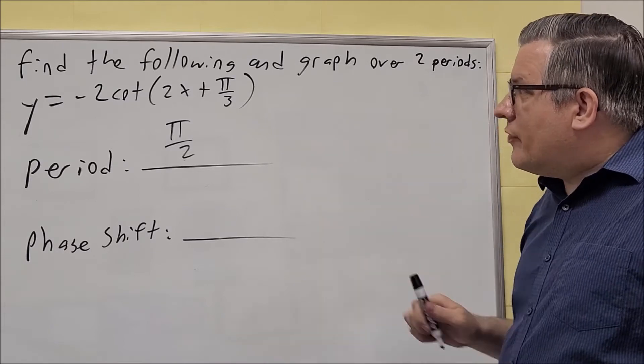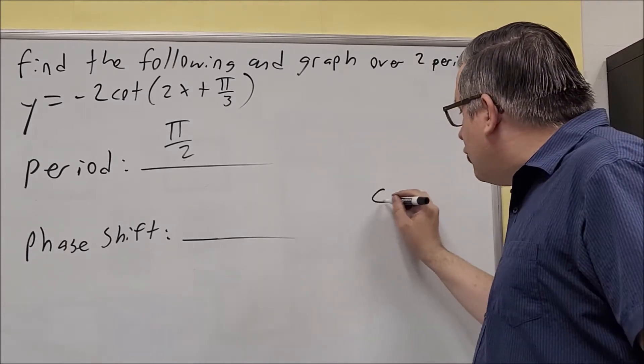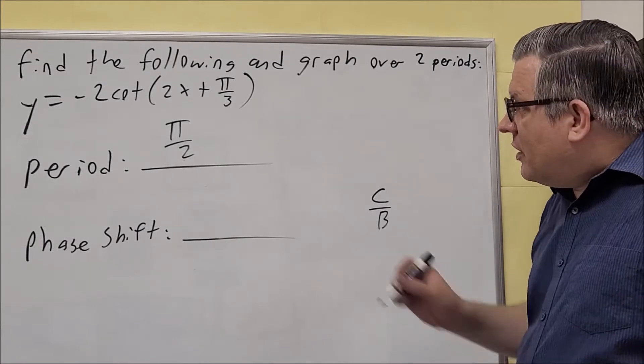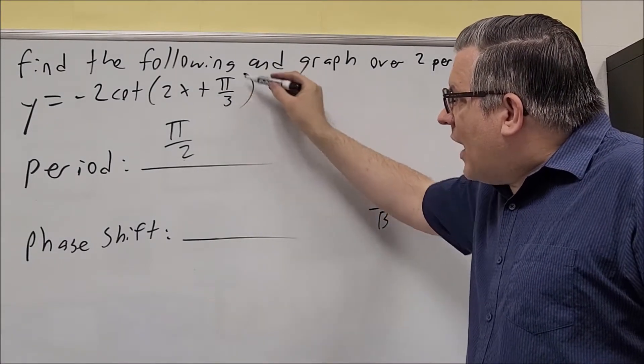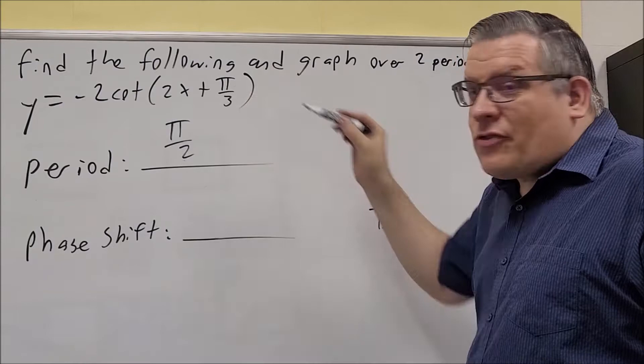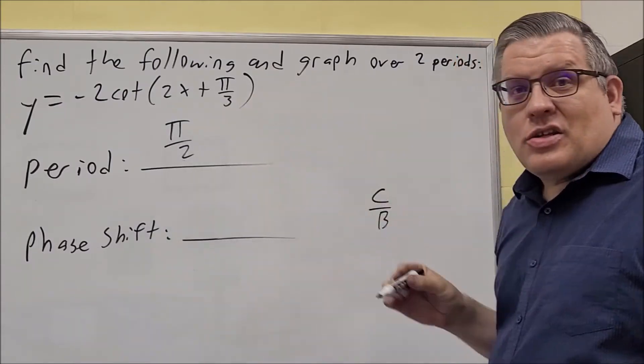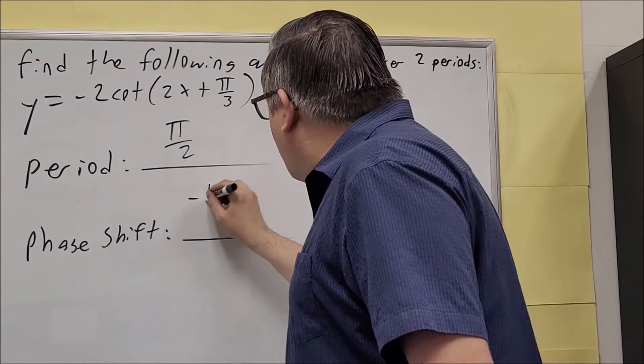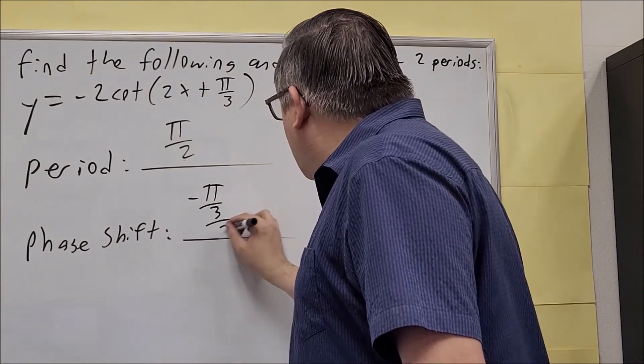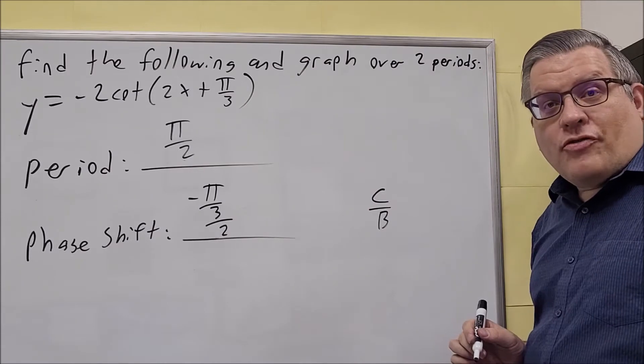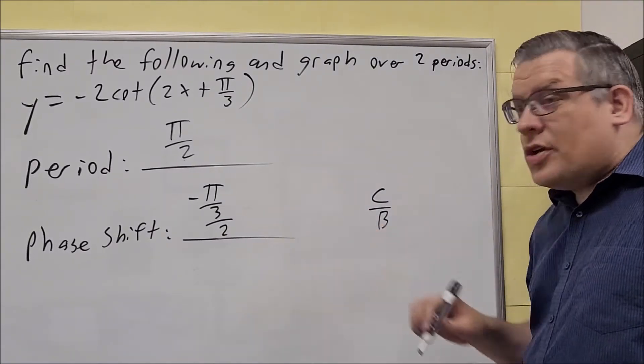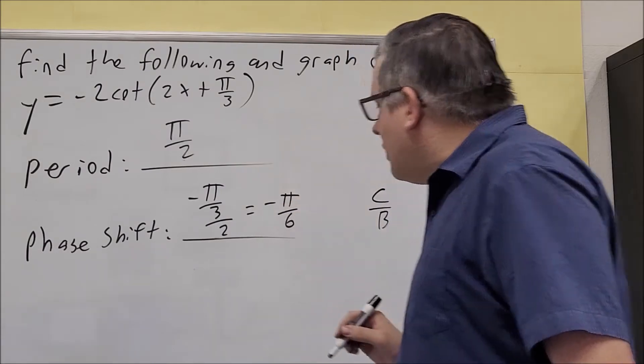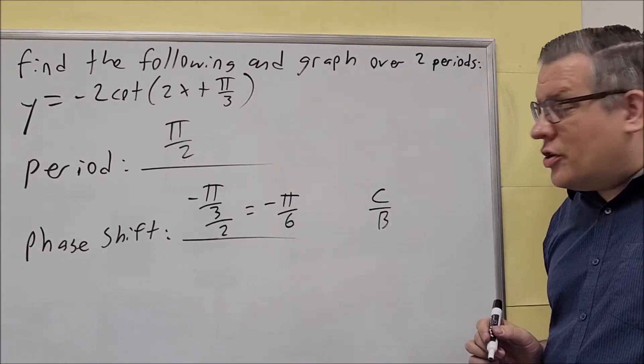The phase shift, because it's a cotangent, is just going to be c over b is the formula. The flip, the c has to be always after a minus sign, so this we can write as minus a negative, and so essentially you're taking the opposite sign of that. It's going to be negative π over 3 divided by the number in front of the x. So it's c over b, and we get negative π over 6 as your phase shift.